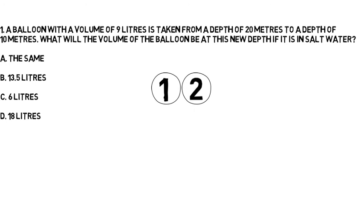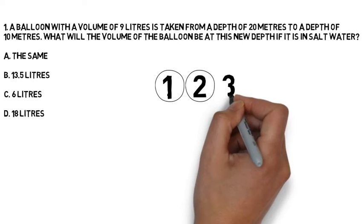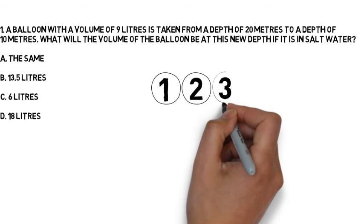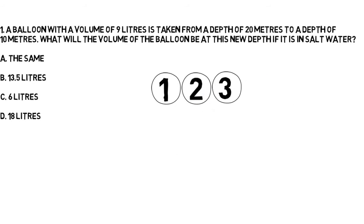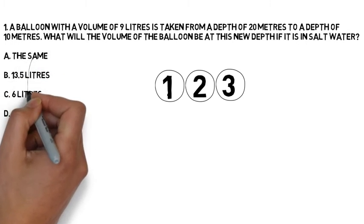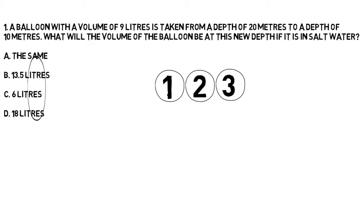What are we going to do? Well, we're going to take the object given to us at its first depth and calculate what it will be at the surface. We're then going to take the object from the surface down to the second depth.